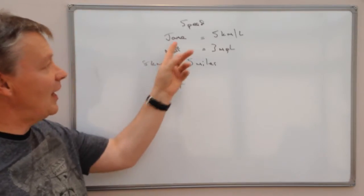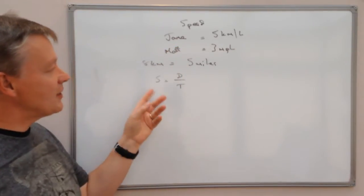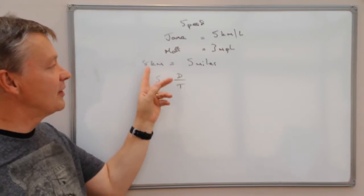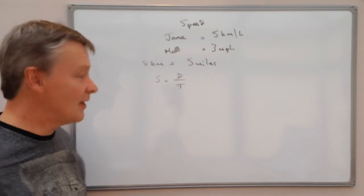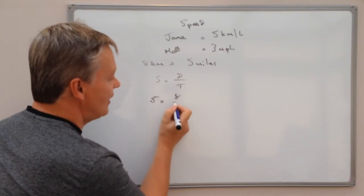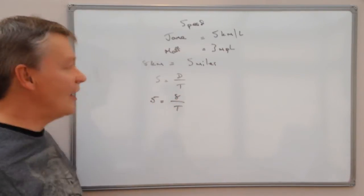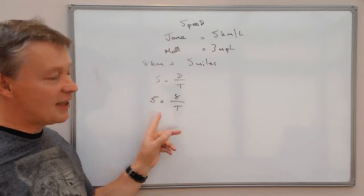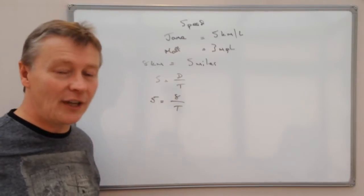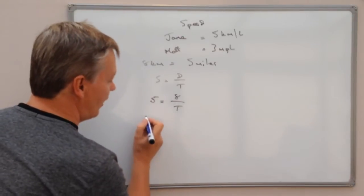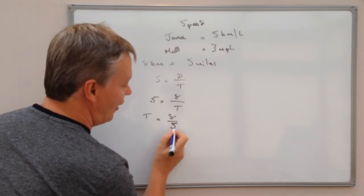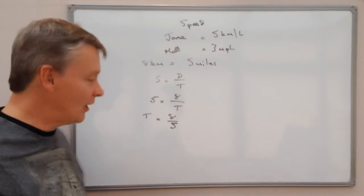The first person I'm going to look at is Jane. Jane walks at 5 kilometres per hour and she's going to cover a distance of 8 kilometres. So we've got 5 equals 8 divided by time. Using a little bit of algebraic manipulation, we get T equals 8 divided by 5.